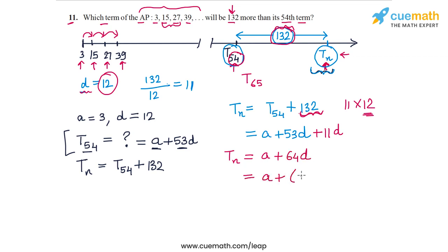So we get Tn as a plus 64d. I can write this as a plus (65 minus 1)d. I am writing this in the form a plus (n minus 1) times d. This means that if Tn is this expression, then n is equal to this number, which is 65. So once again we arrive at the same result: that the term which is 132 more than the 54th term is the 65th term.